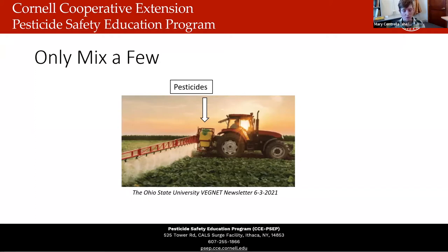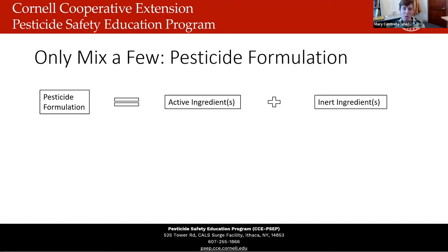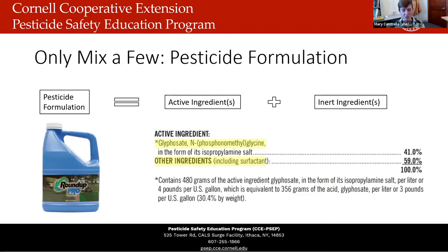A pesticide formulation is the active ingredient plus the inert ingredients — together that makes up the formulation. For example, Roundup Pro is a broad-spectrum post-emergence herbicide. The active ingredient is glyphosate — a specific salt form — and 58–59% of this product is listed as other ingredients, which are the inert ingredients. The active ingredient is what's actually preventing, destroying, repelling, or mitigating the pest, while inert ingredients improve efficacy, shelf life, application ease, and applicator safety.